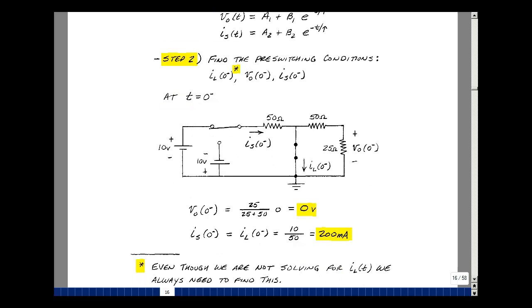The switch has been in this position for a long time. The inductance looks like a short circuit if it's in a circuit for a long time in steady state. The voltage across here is a voltage divider with the zero volts of the short circuit, 25 ohms and 50 ohms, you get zero volts. The current that flows in here is the voltage across this resistance divided by 50 ohms. With the short circuit here and 10 volts here, we'll have 10 volts divided by 50, or 200 milliamps.